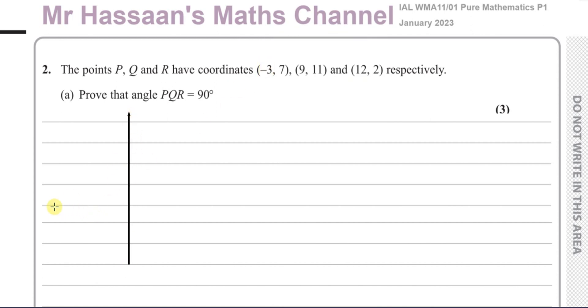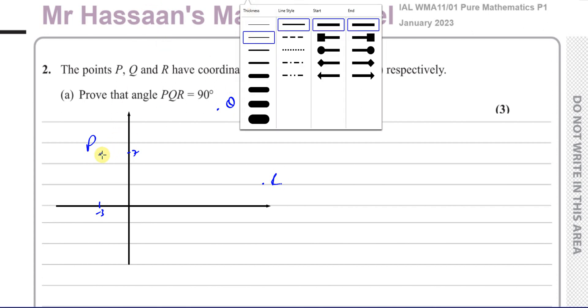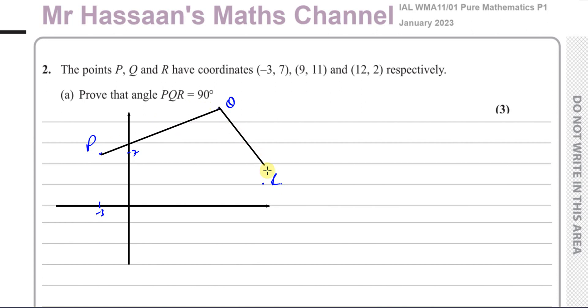Although in the real exam I don't think it would be that wise for such an easy question, I'm going to just make a little sketch here to picture what's happening. It looks like we have to go into the negative side of the X axis. So P has coordinates negative 3, 7, then Q is 9, 11 somewhere up there, and then R is 12 and 2.